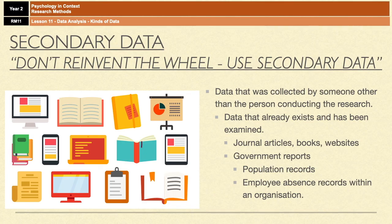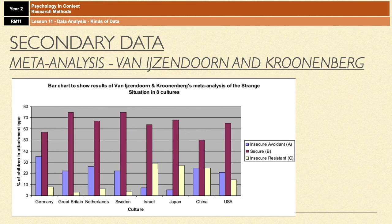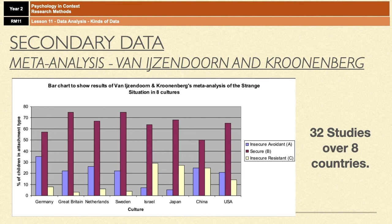A particular type of secondary data is something called a meta-analysis. You've actually already come across one — the meta-analysis on cross-cultural variations in attachment conducted by van IJzendoorn and Kroonenberg. They used 32 studies conducted over eight different countries. They didn't conduct the studies themselves; those were conducted by researchers in those countries. Van IJzendoorn and Kroonenberg simply took the results from those individual pieces of research and drew their own conclusions from this big spread of data.